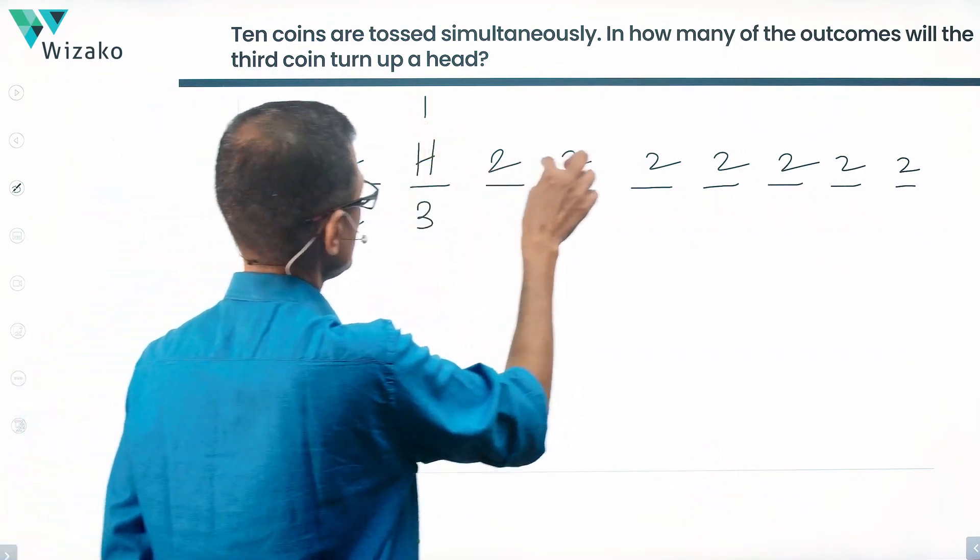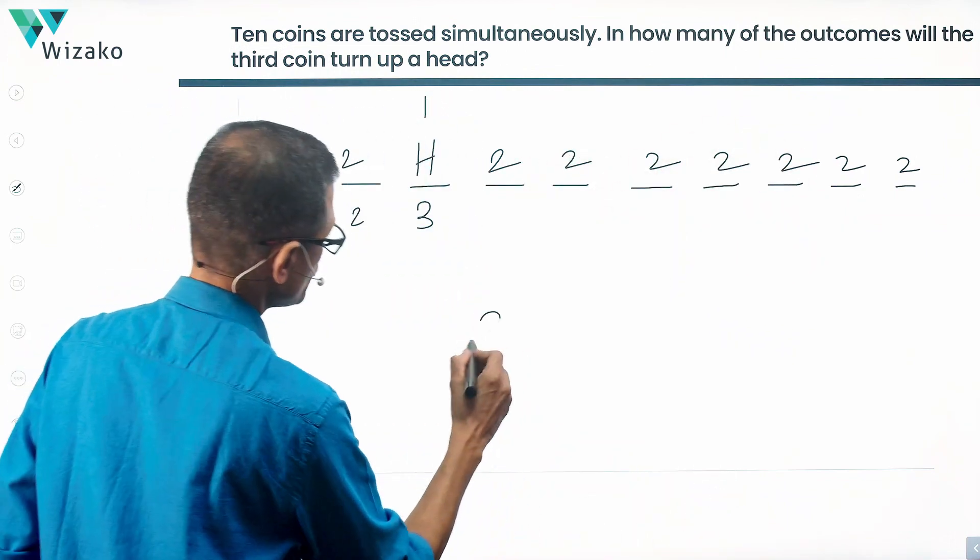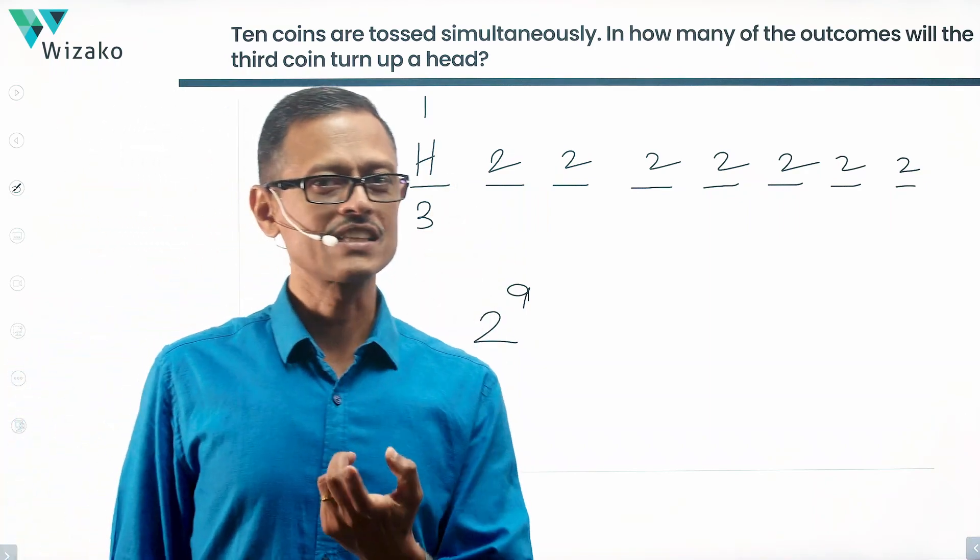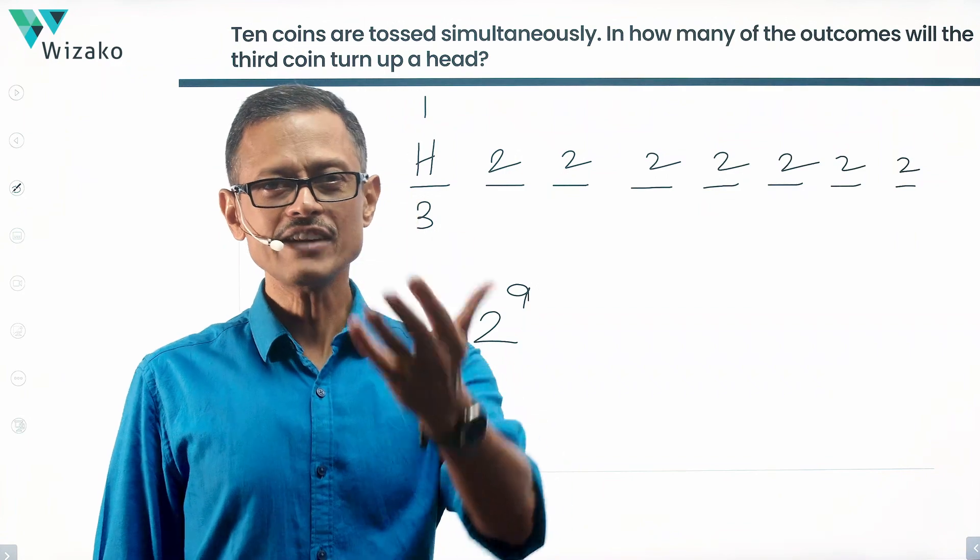So what is the total number of outcomes? Two times two times one times two times two, so on and so forth. Two raised to the power of nine is the total number of possible outcomes in which if I toss 10 coins simultaneously, the third coin will definitely be a head.